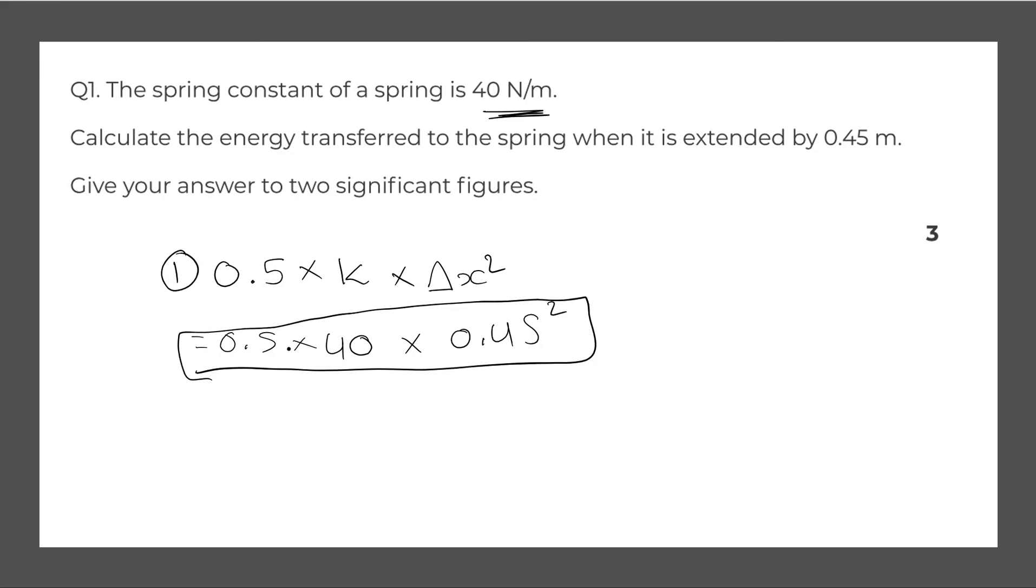All we need to do is type it into the calculator. 0.5 multiplied by 40 multiplied by 0.45 squared. That will give us an answer of 4.05. And that is to two significant figures. So we will get three marks for the correct answer and the working out.